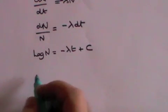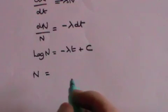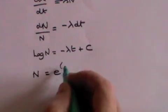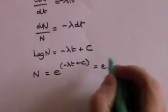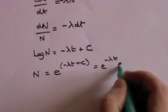We can now put all these terms up as exponentials. The exponential of log N, of course, is simply N. The exponential of this term is the exponential of minus lambda t plus c, which can be written as e to the minus lambda t, e to the c.